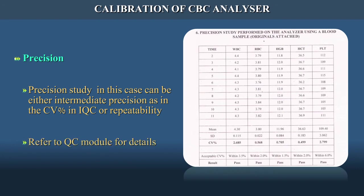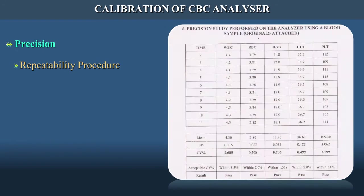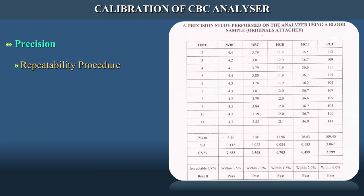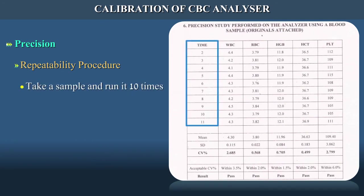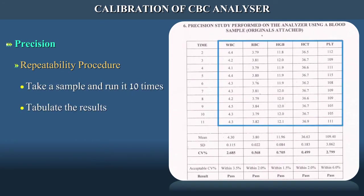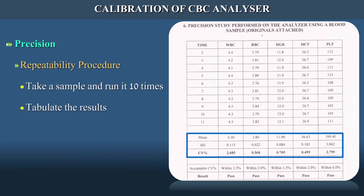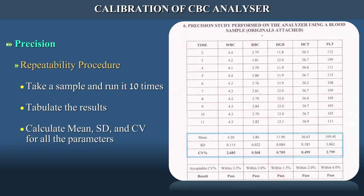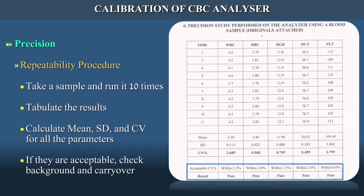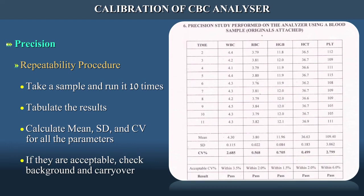Refer to the QC module for details. Repeatability procedure: take a sample and run it 10 times, tabulate the results, and calculate mean, SD, and CV for all parameters. If they are acceptable, check background and carryover.